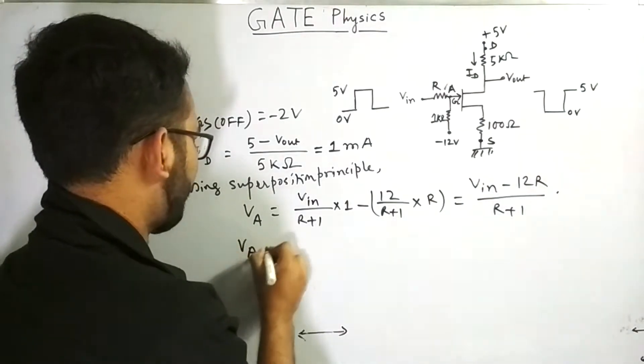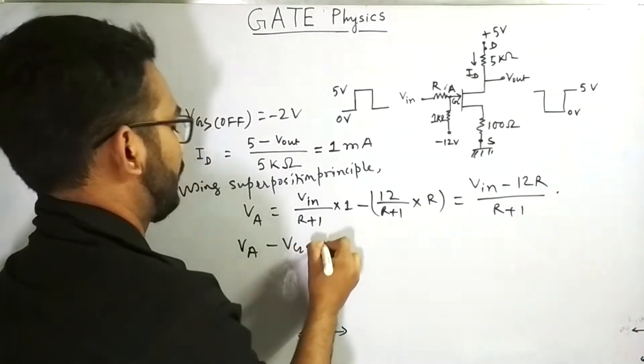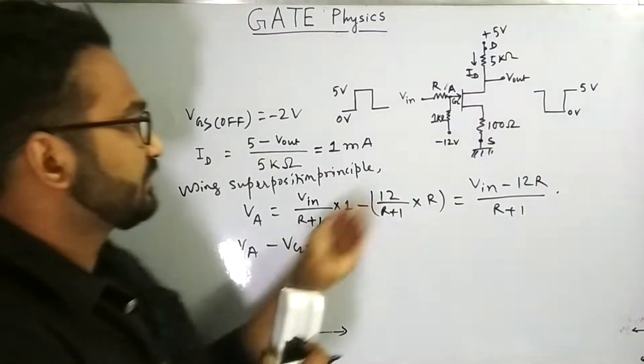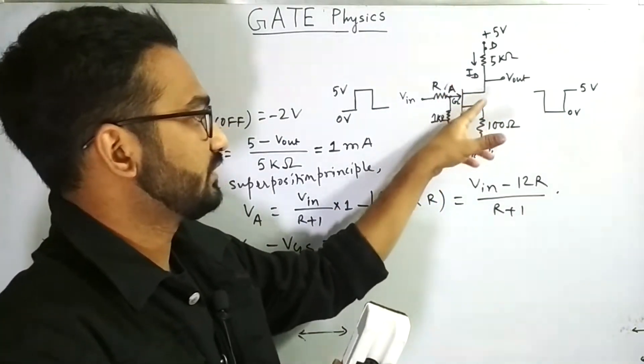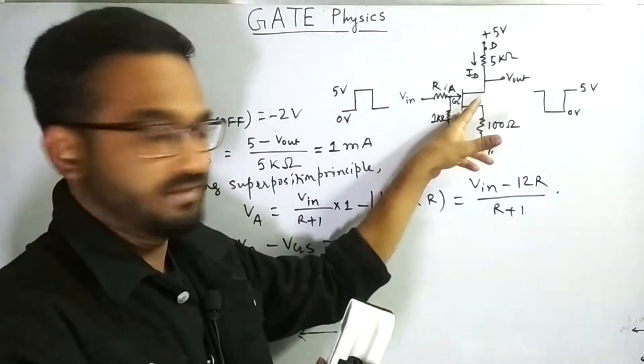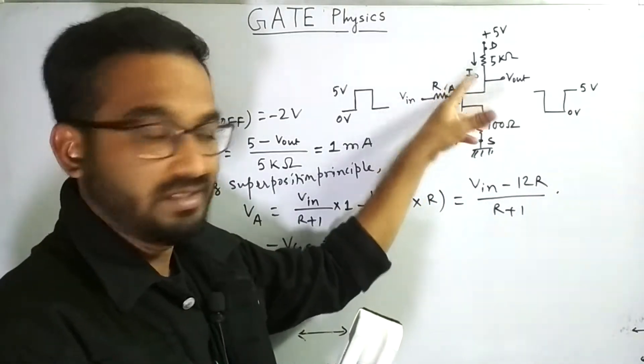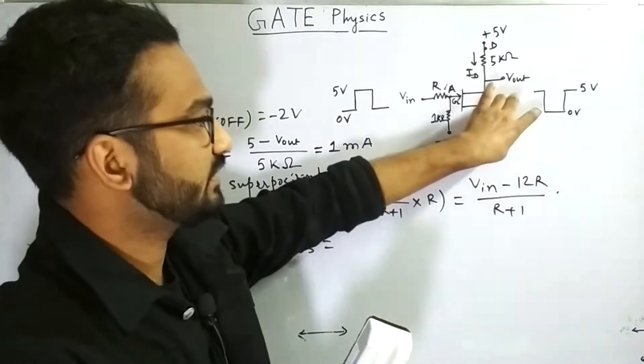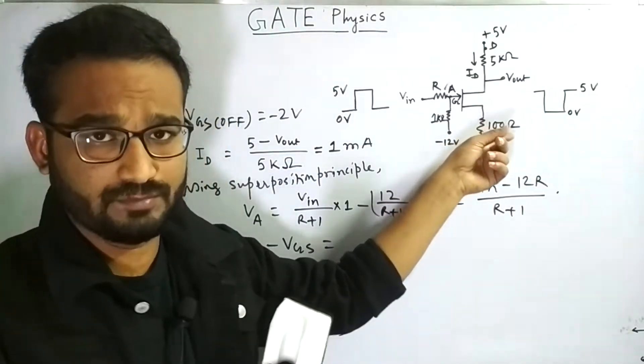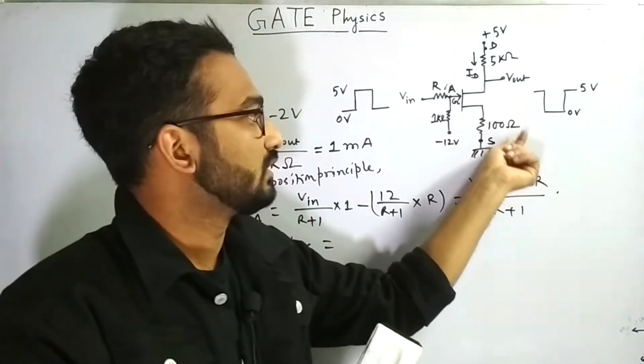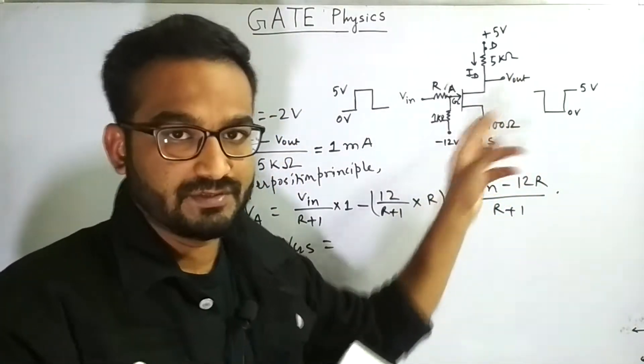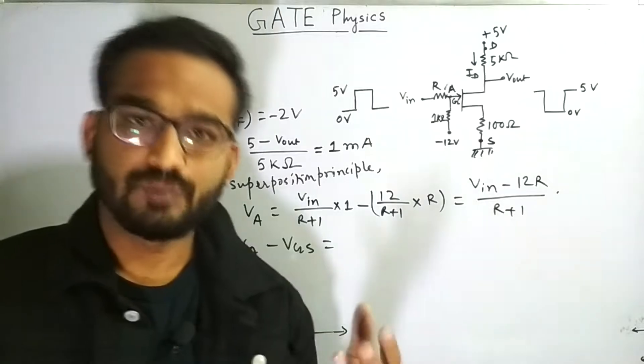So VA minus VGS. So VA minus VGS means VA is the potential at this point and VGS means gate to source. This potential will be subtracted from this VA potential and the remaining potential will appear in this resistance of 100 ohm. Now, if you know the current through this resistor, then we can know the corresponding voltage drop.